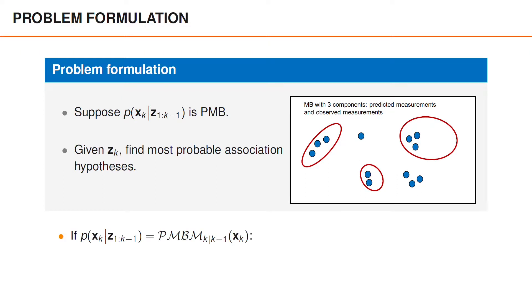In general, the predicted distribution is a PMBM distribution, and we can then view the posterior as a mixture of PMB distributions. Given a suitable strategy for solving the problem above, we can first find a number of the most probable hypotheses for every PMB distribution in the PMBM posterior.